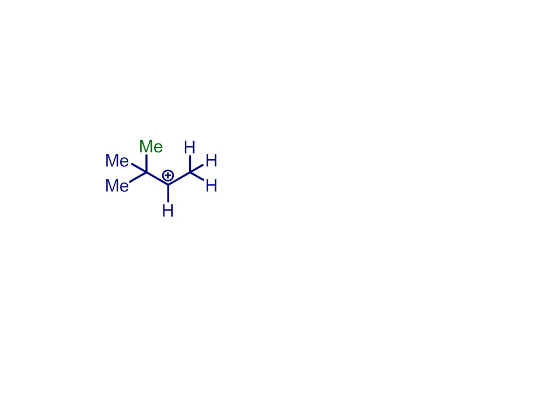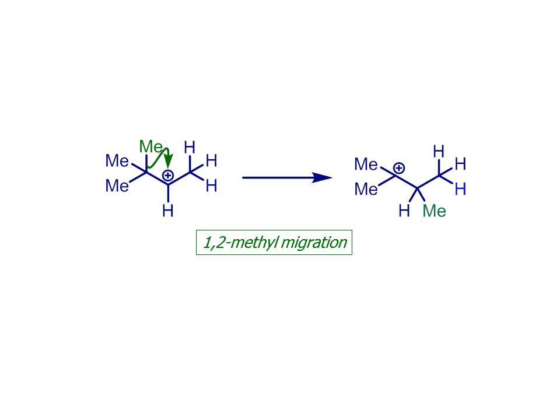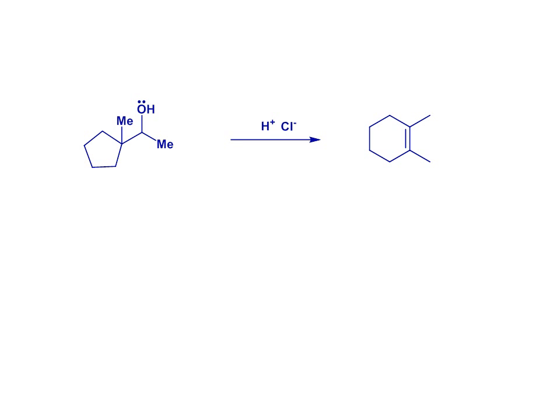Other groups can migrate too. This is a methyl migration, which converts a secondary carbocation into a tertiary carbocation. The methyl group is again moving from one carbon to the carbon immediately next door, so it's classified as a 1,2-methyl migration. In the context of carbocation rearrangements, watch out for cyclic systems that can rearrange to expand the size of the ring, which relieves ring strain as well as giving rise to more substituted carbocations.